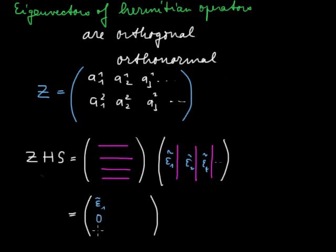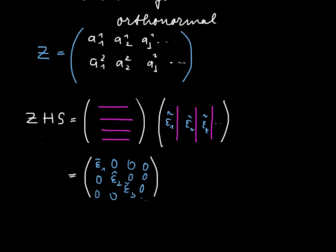So, 0 and 0, and here, for example, this one with this one, also here, 0. Only this one with this one, so the second with the second, gives me epsilon 2, because they are the same vectors, just multiplied by epsilon 2 tilde. So, as a result, you see, I'm getting, on the diagonal, the diagonal element, the energies, and all the other elements of ZHS will be 0.